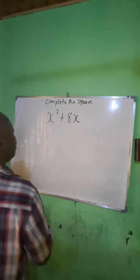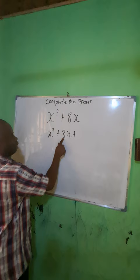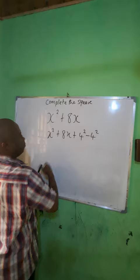To complete the square, you add the square of half the coefficient of the linear term in x. So you add half of 8, which is 4, squared. Then you subtract what you added — the reason is that if you subtract 4 squared, you get back the original expression.